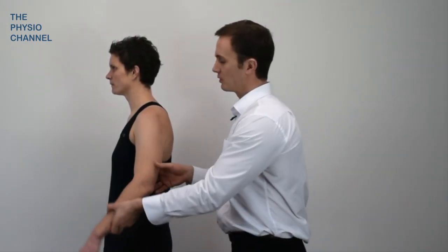The starting position for the test is 90 degrees of shoulder abduction, 90 degrees of elbow flexion, and around 80 degrees of external rotation.